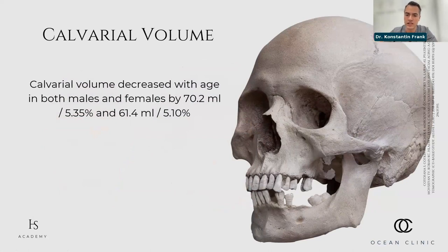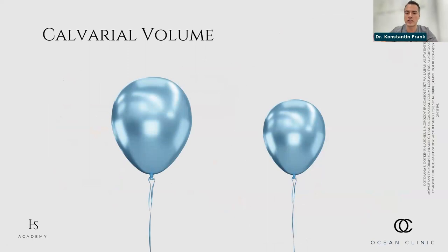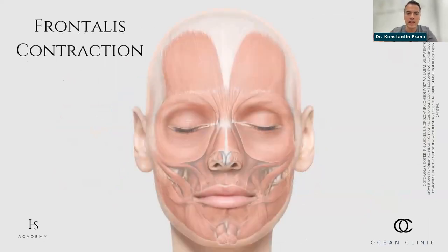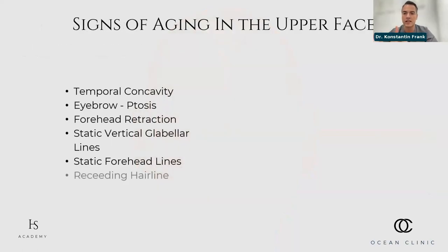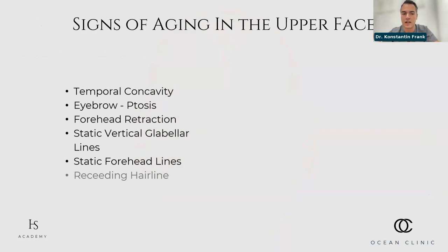We published this in the Aesthetic Surgery Journal a few years ago. Imagine the skull shrinking down like a balloon, causing the overlying soft tissue to descend — not because the soft tissue descends by itself, but because the bony support is taken away. The permanent contraction of the frontalis muscle adds to static and dynamic forehead lines. In many patients we observe eyebrow ptosis — not because the eyebrow is sagging per se, but due to calvaria volume loss. We also see forehead retraction, static vertical glabella lines, and static forehead lines, as well as a receding hairline.